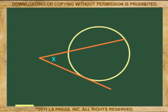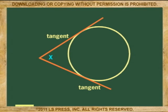Now, angles made by a secant and a tangent or two tangents are determined the same way.